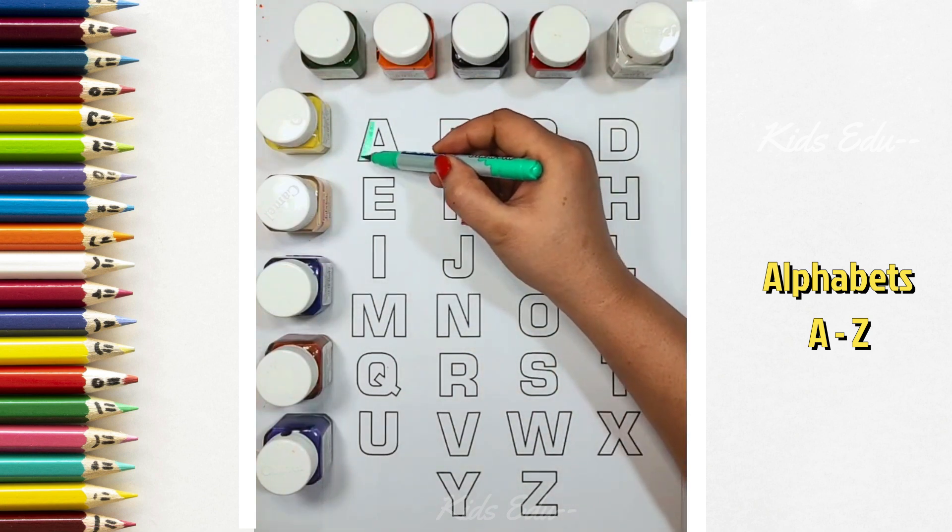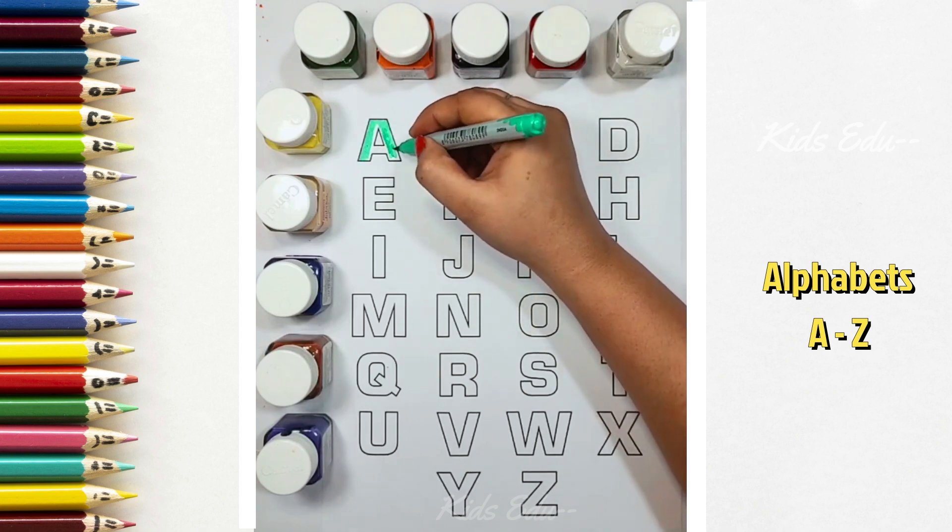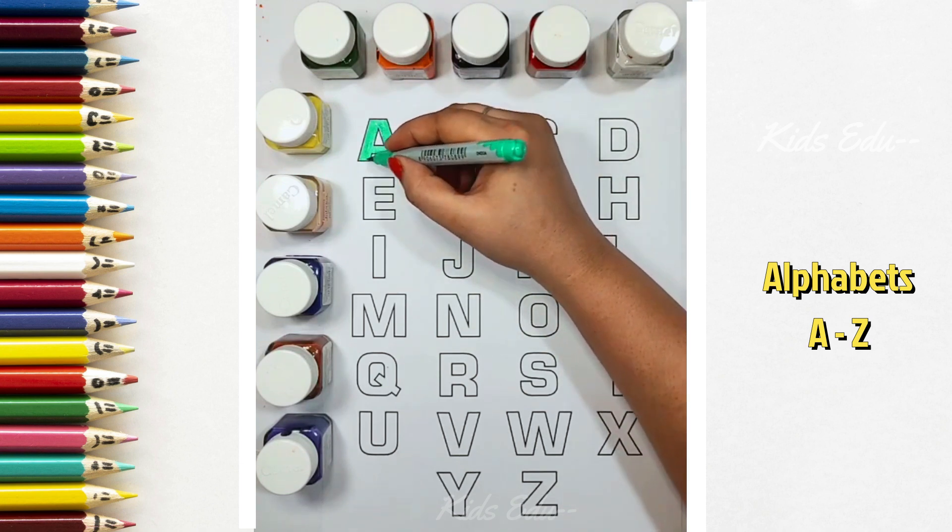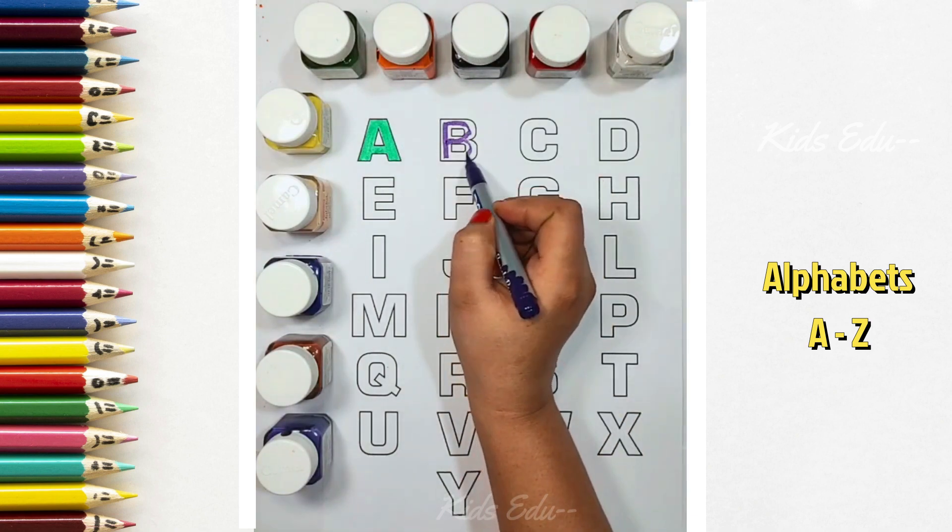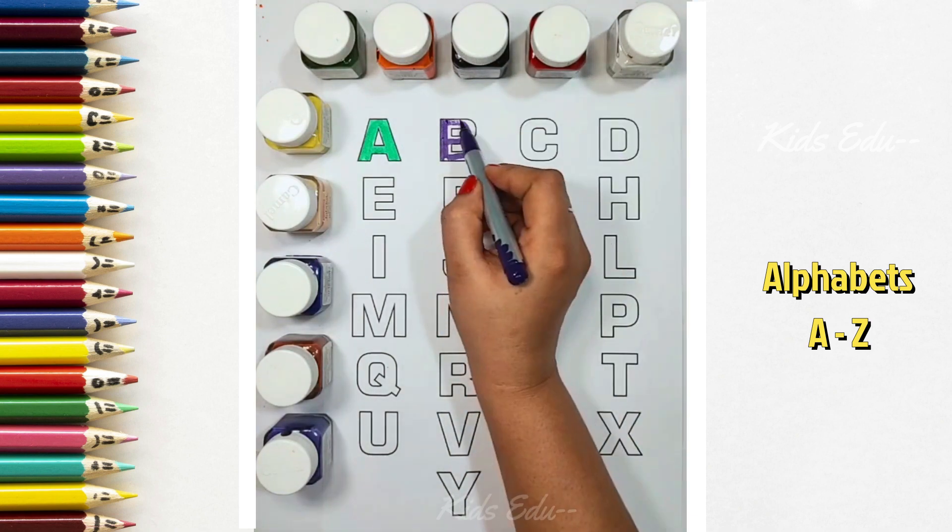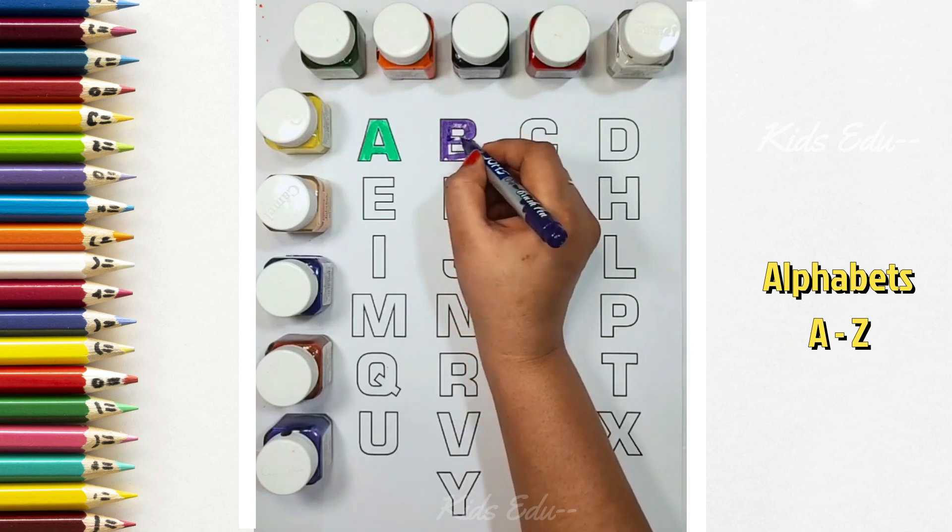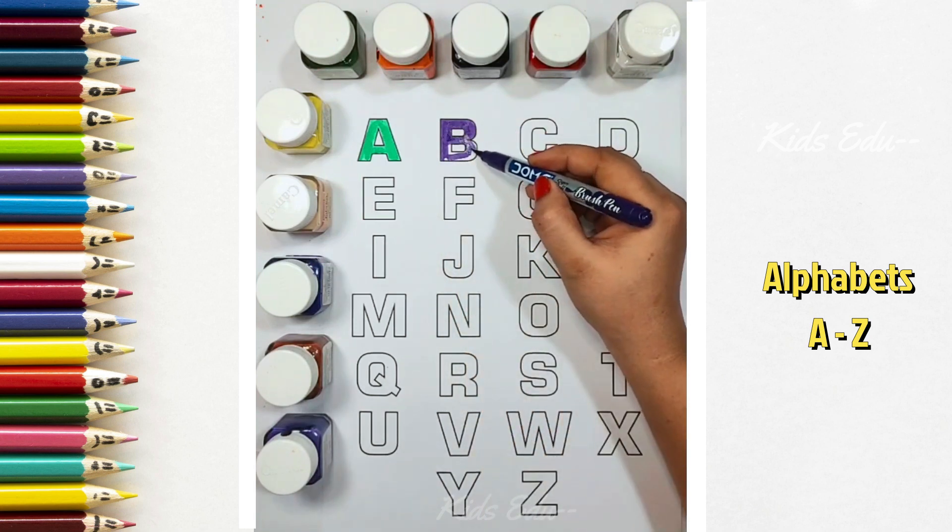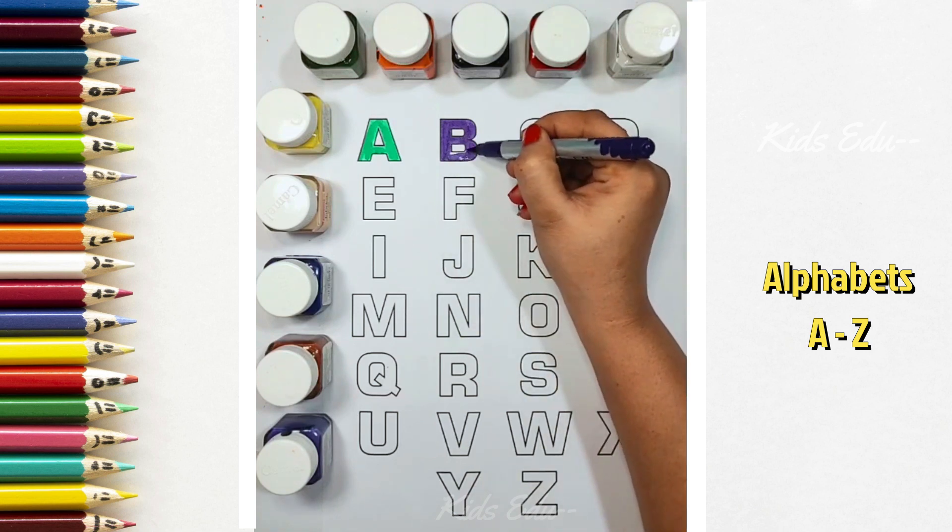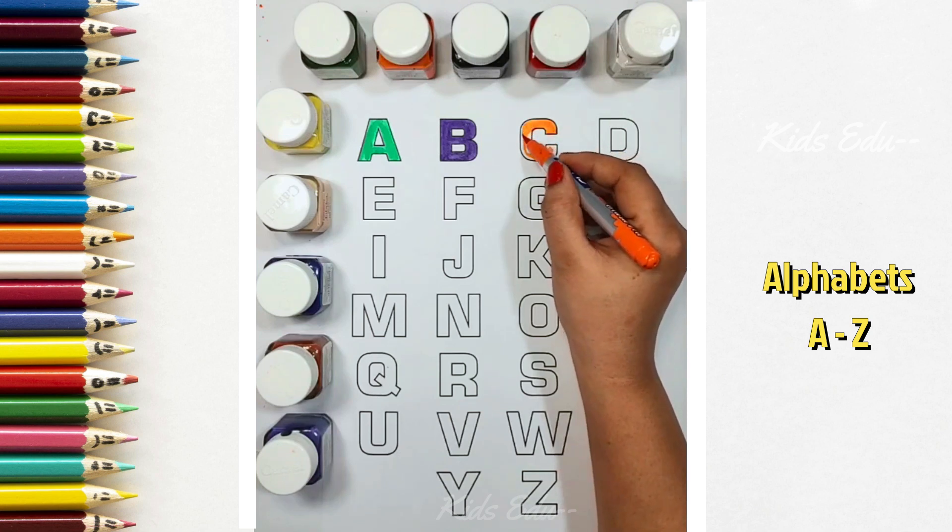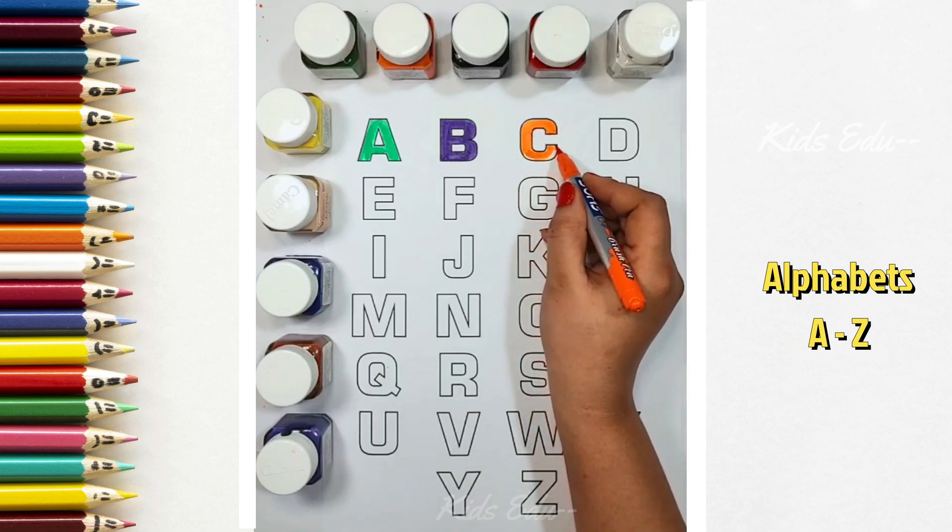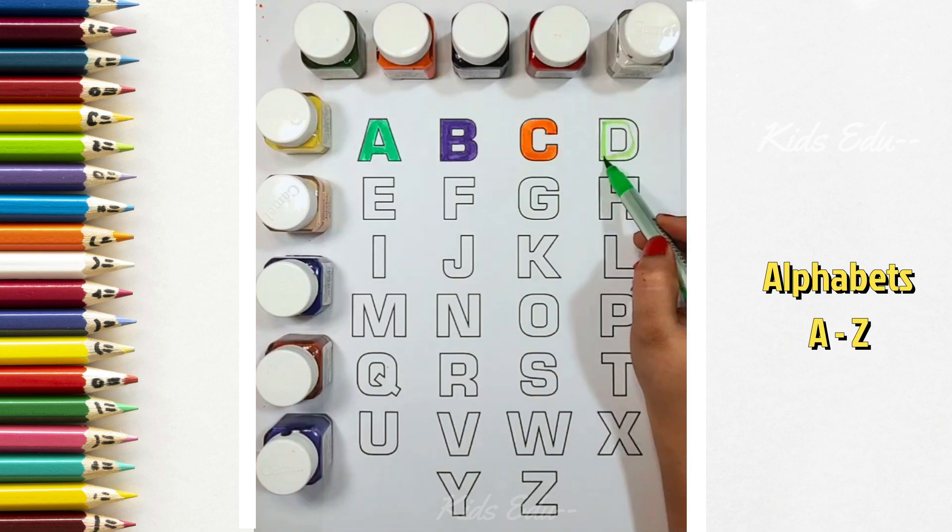Green color, A, A for Apple. Purple color, B, B for Ball. Orange color, C for Cow. Light green color, D for Doll.